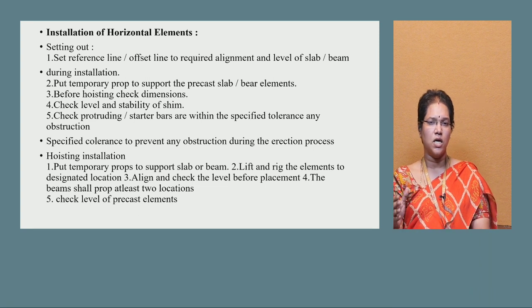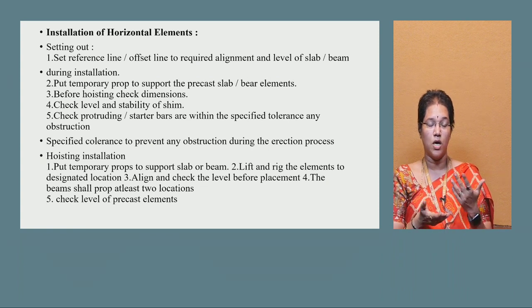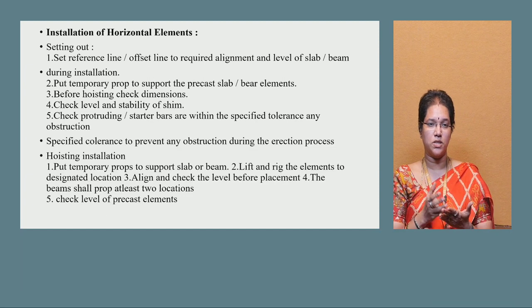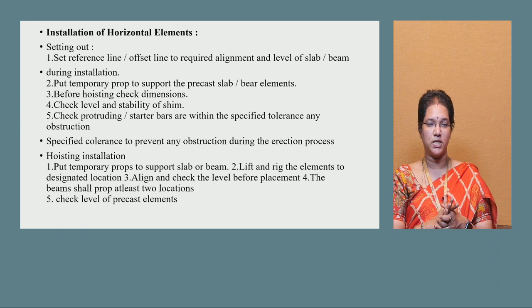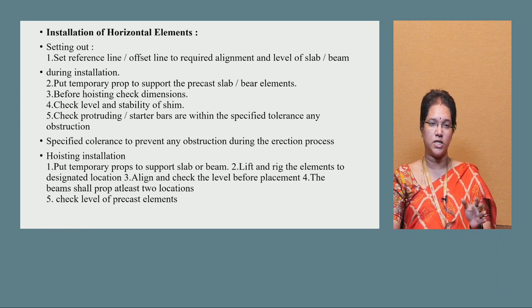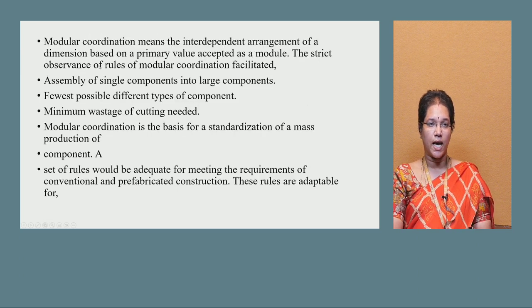During the erection process, elements are placed at specified positions — inside and outside within the given dimensions. For hoisting installation, put temporary props to support slabs or beams. Lift and rig elements to the designated location. Align and check the level for placement. The beam shall be supported at least at two locations. Check level of precast elements — this is very important.